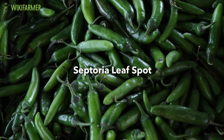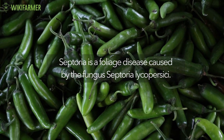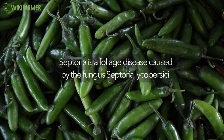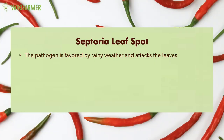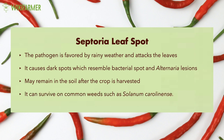Septoria Leaf Spot. Septoria is a foliage disease caused by the fungus Septoria lycopersici. The pathogen is favored by rainy weather and attacks the leaves. It causes dark spots which resemble bacterial spot and Alternaria lesions. Unfortunately, the pathogen may remain in the soil after the crop is harvested, as it can survive on common weeds such as Solanum carolinense.